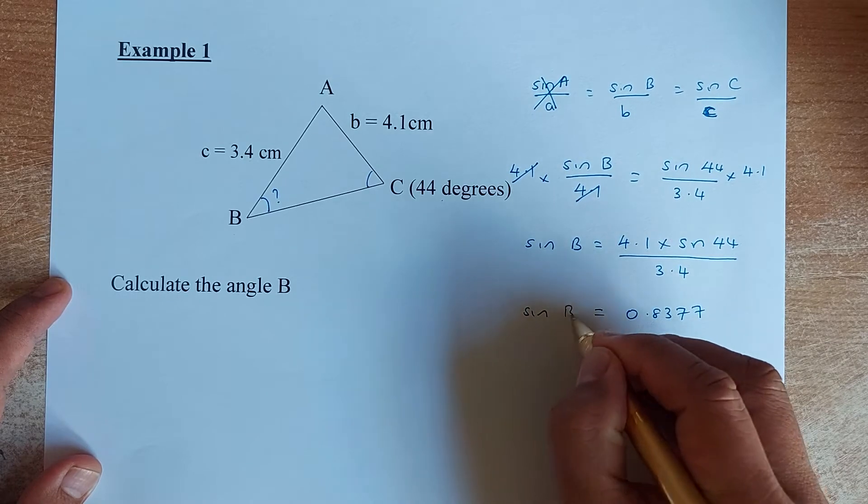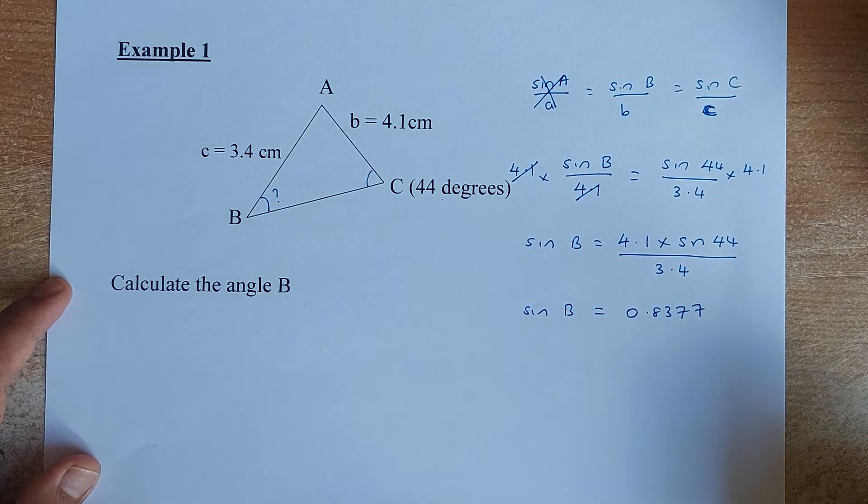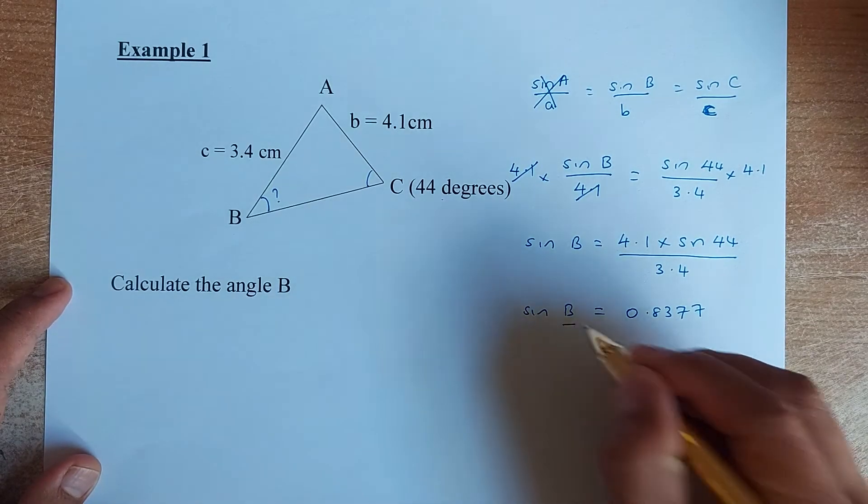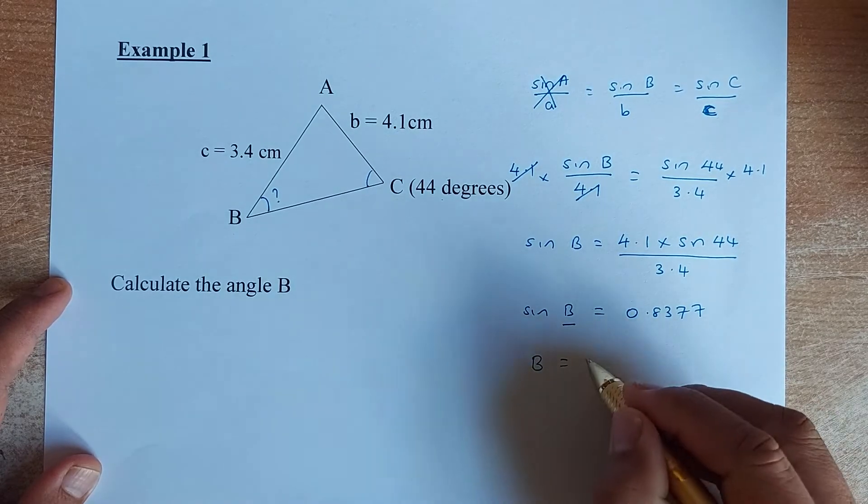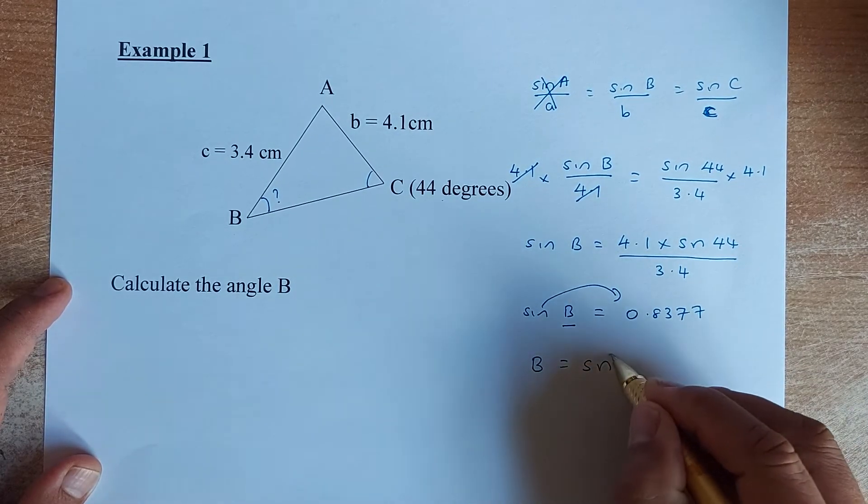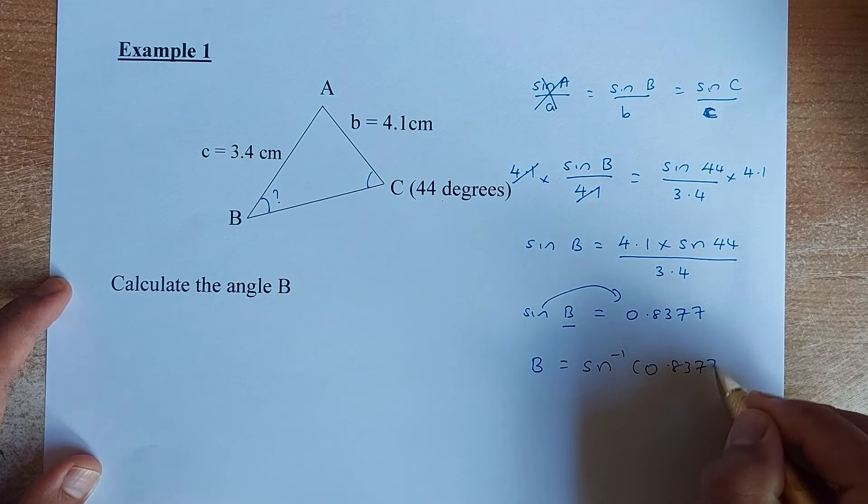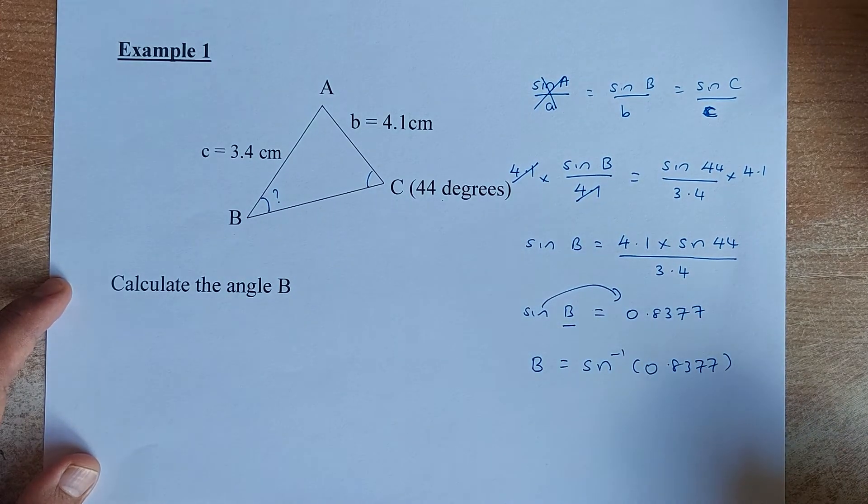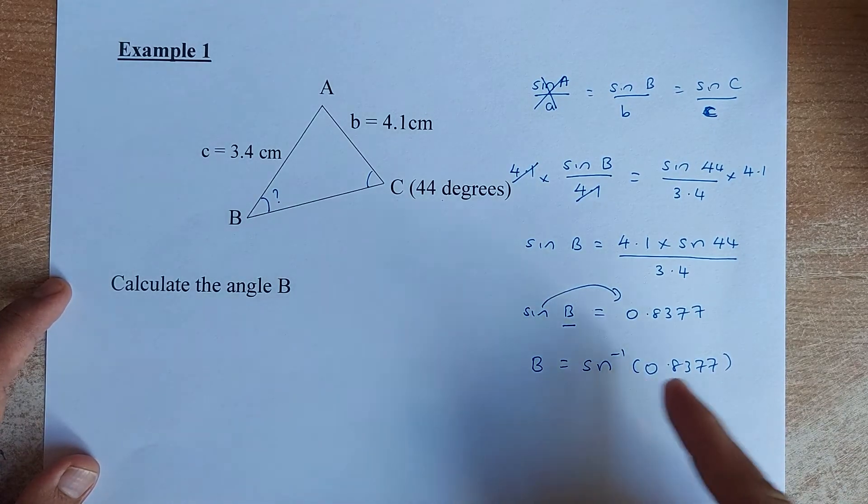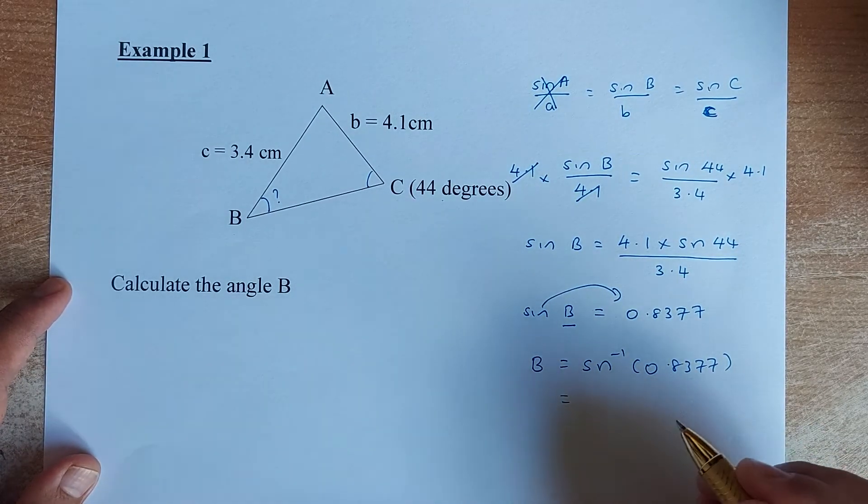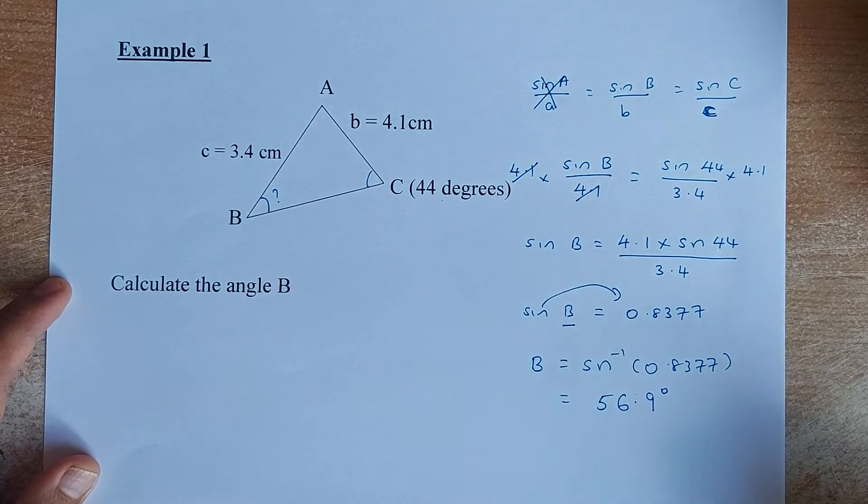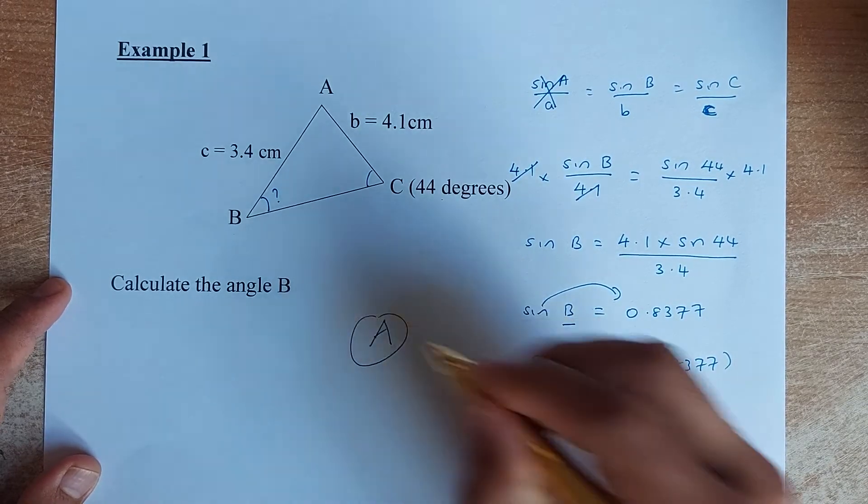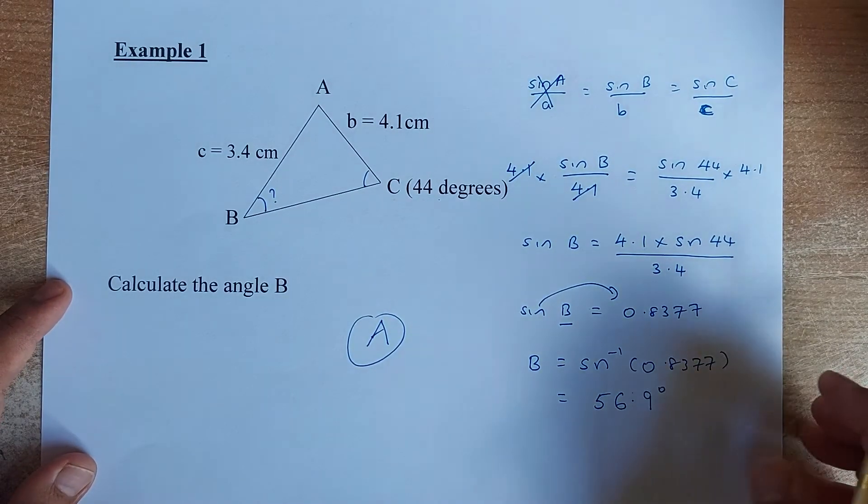So sine B is equal to 0.8377. That's not the answer because you are interested in B instead of sine B. Listen carefully. To get your B, you need to bring the sine over. So you're going to put sine inverse 0.8377. I've rounded to 4 decimal places. Now if you can find the sine inverse button, put it in your calculator. And I've done it before and the answer is 56.9 degrees. So that will give you an achieve in your exam. Not too bad, right?